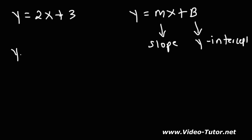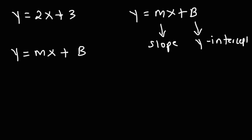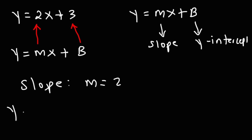If we were to write the slope-intercept equation, we can clearly see that M, which is the number in front of x, is 2, and B is the constant — that's 3. So in this problem, the slope, which represents M, is 2, and the y-intercept, which is equal to B, is 3. That's a quick and simple way of how you could find the slope and the y-intercept from the equation.